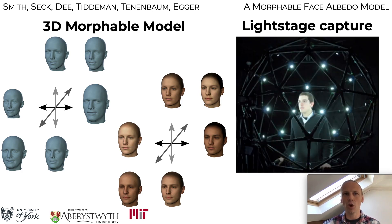A light stage uses polarizing filters and controlled lighting to capture intrinsic diffuse and specular albedo maps. In this paper we present a pipeline for capturing and building an albedo morphable model using a light stage, and release a new model built from our own captured data set augmented with a publicly available data set.